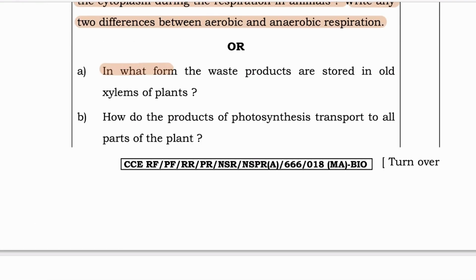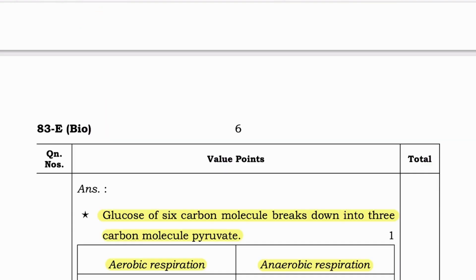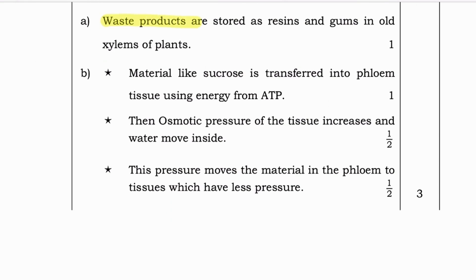Optional question: In what form are waste products stored in old xylem of plants? How do the products of photosynthesis get transported to all parts of the plant? Waste products are stored as resins and gums in old xylem. For transport, materials like sucrose are transferred into phloem tissue using energy from ATP, then osmotic pressure increases and water moves inside; this pressure moves the material in phloem to tissues which have less pressure.